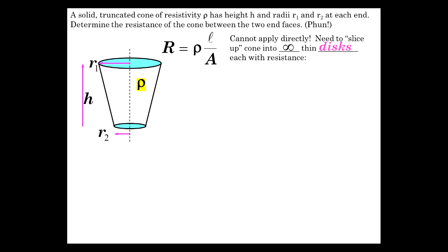So we're going to slice this thing up into an infinite number of thin little disks. And each disk from top to bottom is going to have resistance dR, which is rho L over A. L is dx, A is pi R squared. Obviously, R is changing. So it's going to be a challenge for us to figure out what R is.